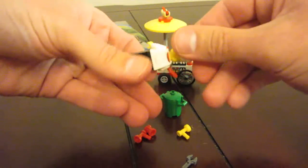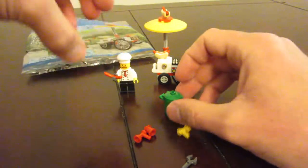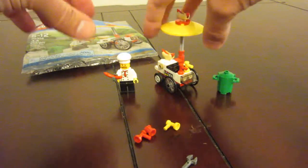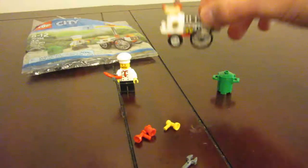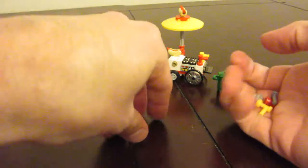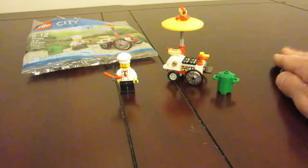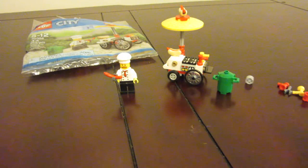So once again here is your chef. Or he's not a chef, he's a hot dog man. He's got the trash can, got your hot dog cart. This is what it looks like from different angles. And then once again all these other pieces that tend to get lost. So that's it. That is the Lego 30356 hot dog cart.